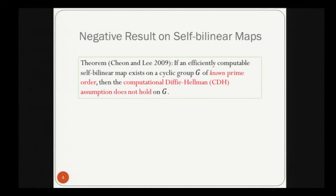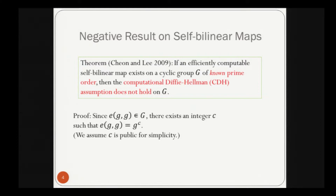However, there is a negative result on self-bilinear maps. In 2009, Chen and Li proved this theorem: if an efficiently computable self-bilinear map exists on a cyclic group of prime order, then the computational Diffie-Hellman assumption does not hold on G, and such a group is not suitable for cryptographic applications. The proof is simple: since E(g,g) is in G, there exists an integer C such that E(g,g) = g^C.